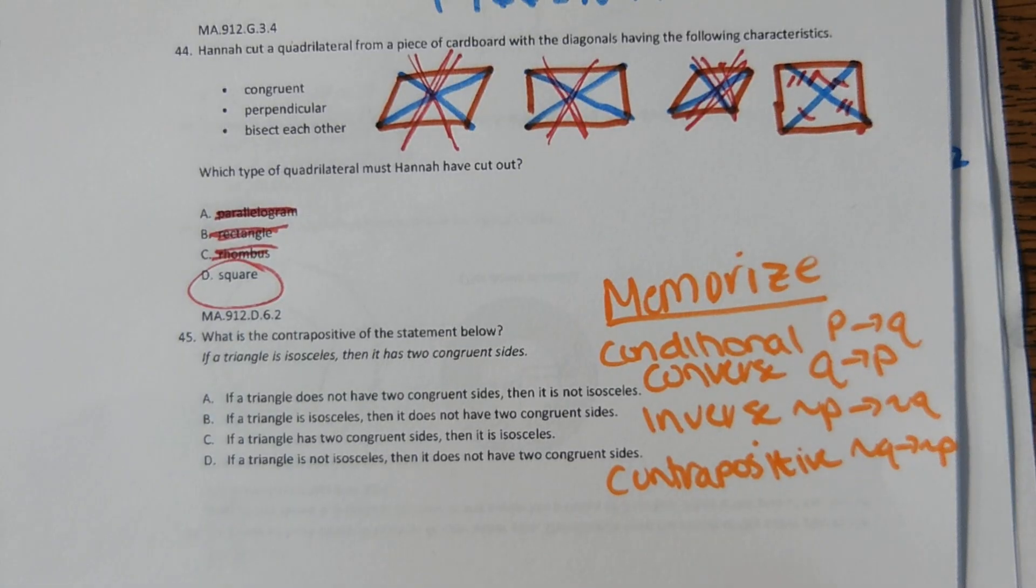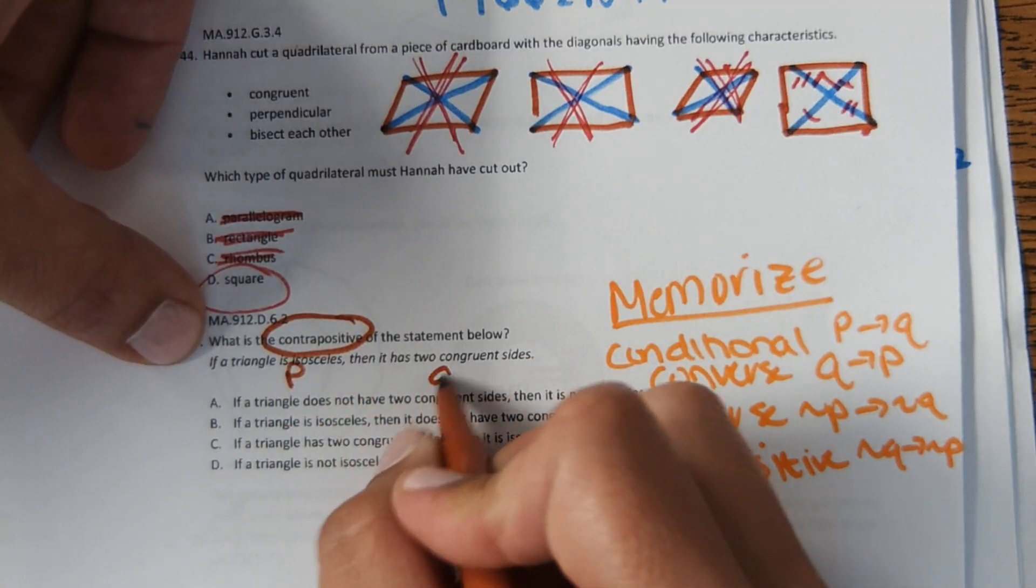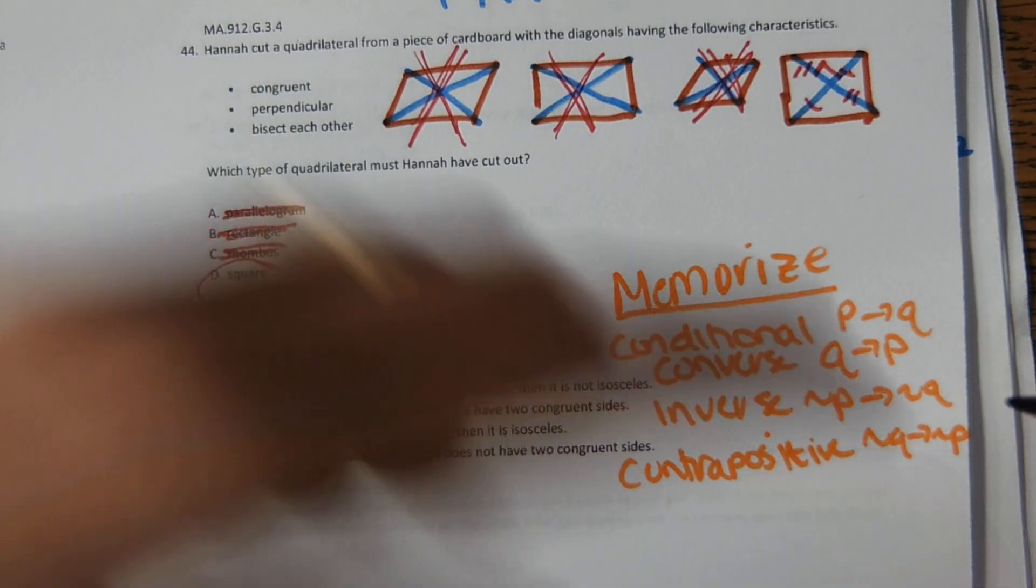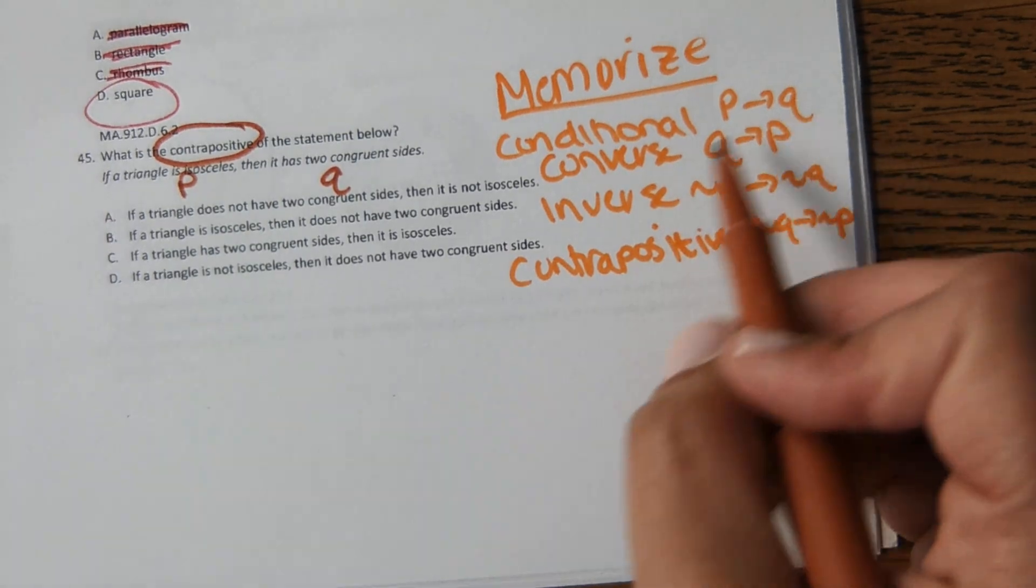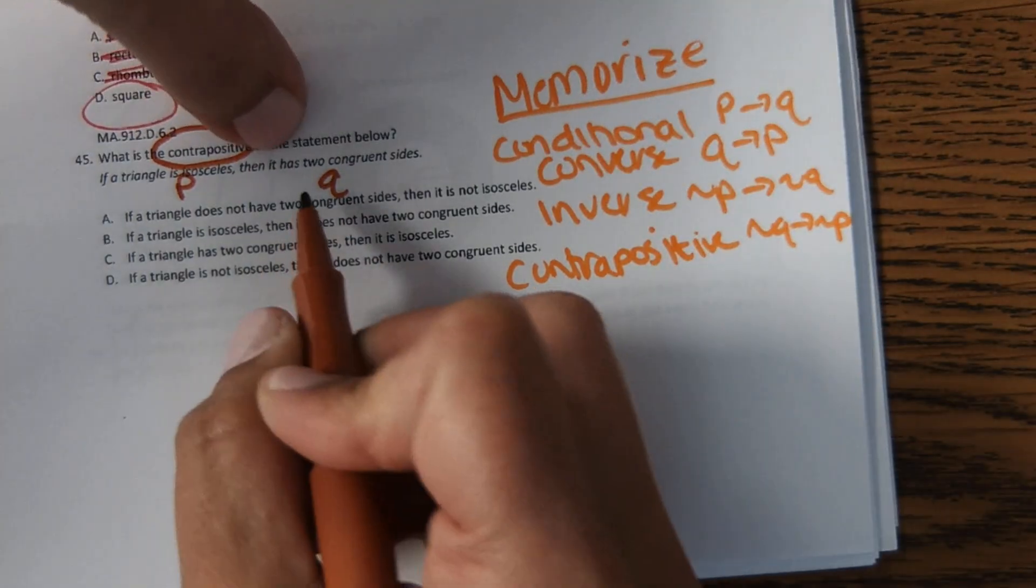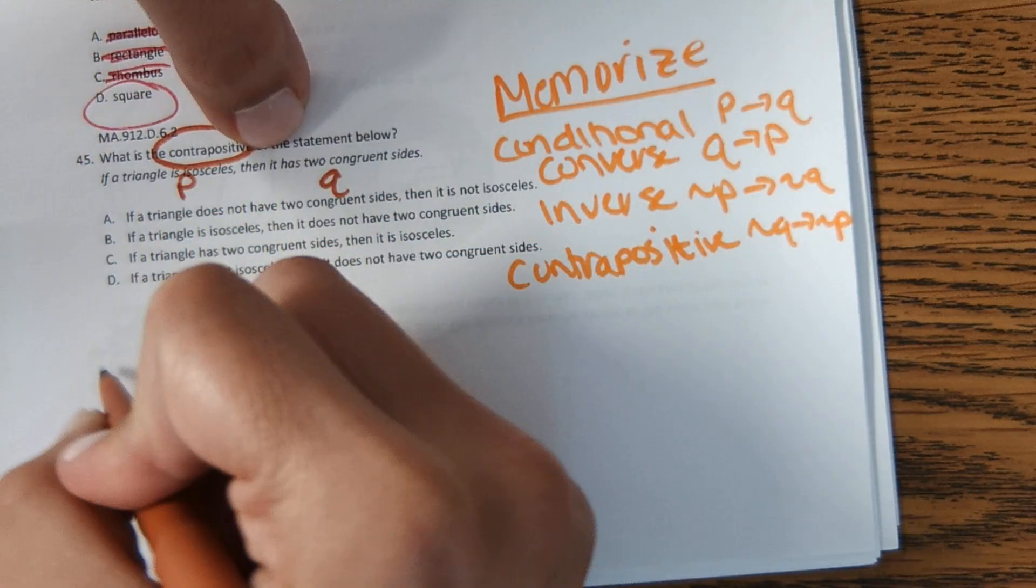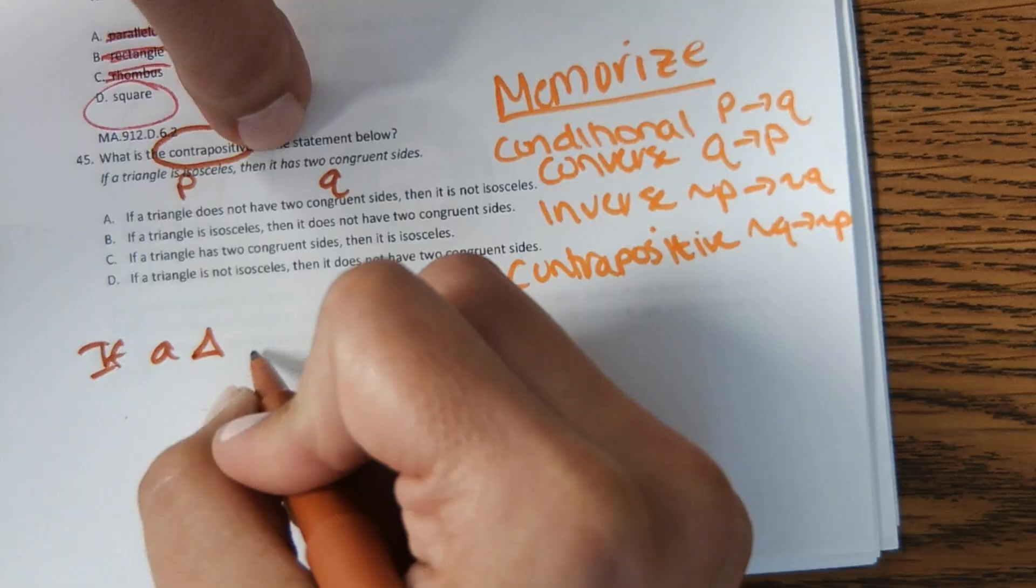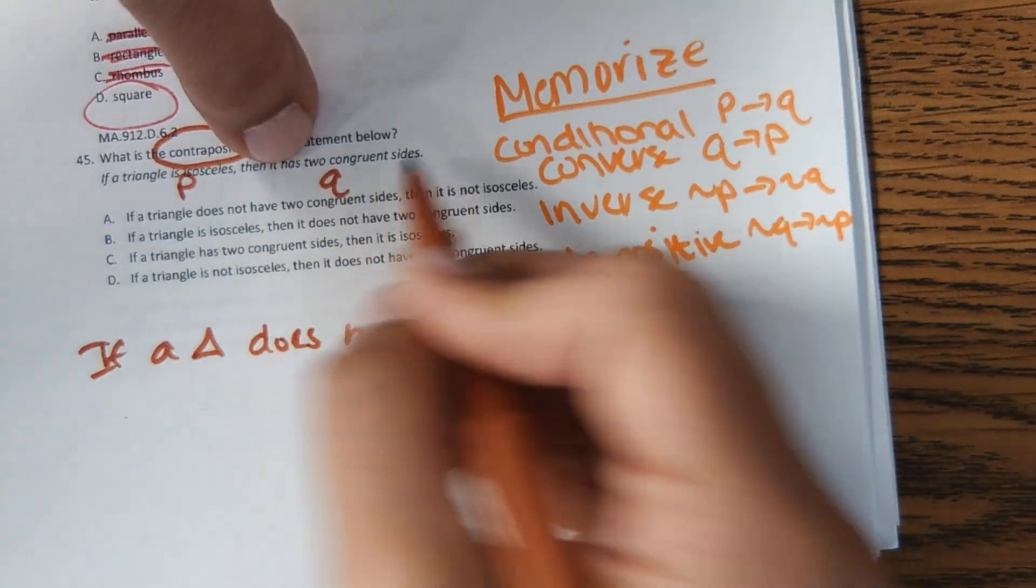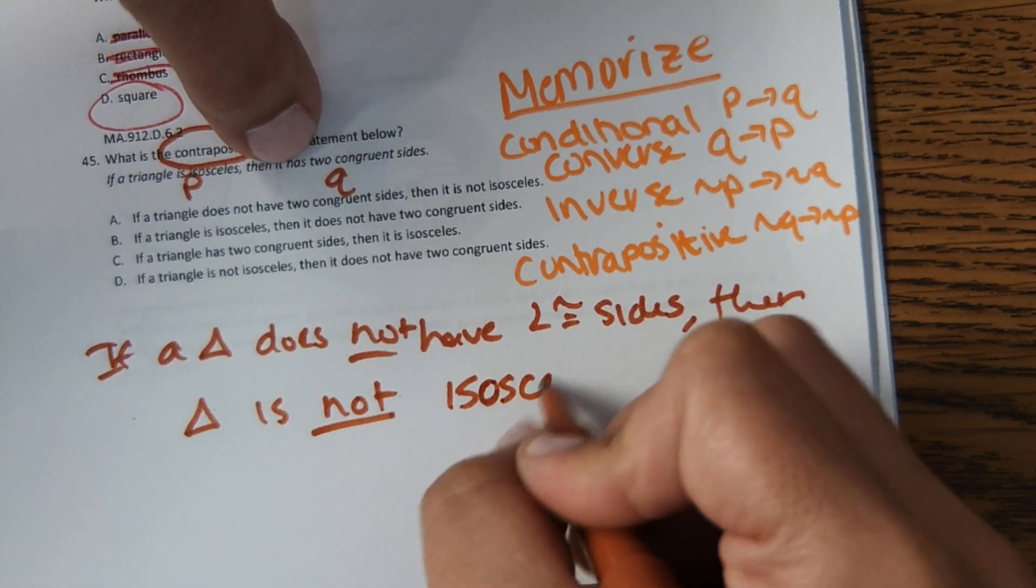And then the next one, it says what is the contrapositive of the statement below? So in this statement, it has hypothesis and conclusion, P then Q. And then you have to memorize this. This won't be on any reference sheet, but they will ask about it on the EOC. So the conditional is P then Q. Converse is Q then P. Inverse is not P then not Q. And then contrapositive, not Q then not P. So we're doing not Q. So not this part of the statement, then not this part. So it says if a triangle is isosceles, then it has two congruent sides. So if a triangle does not have two congruent sides, so we did not Q, then triangle is not isosceles. So not P.